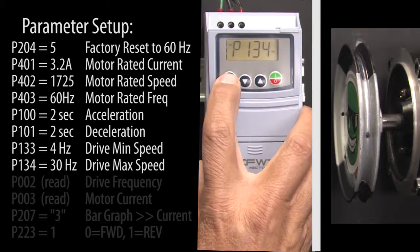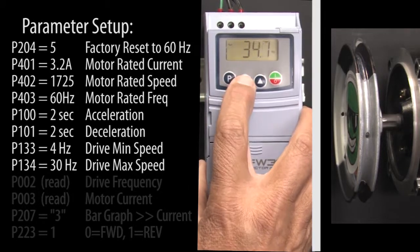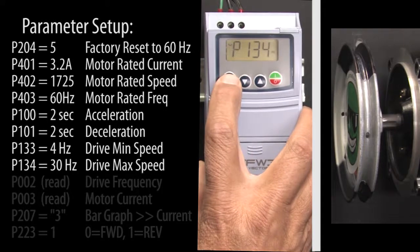Scroll to the max speed parameter, hit P, let's change our max speed to 30 Hz. Hit P to accept that.